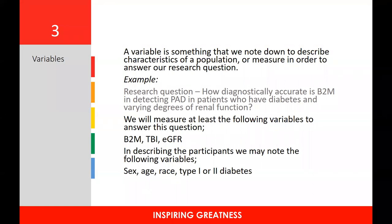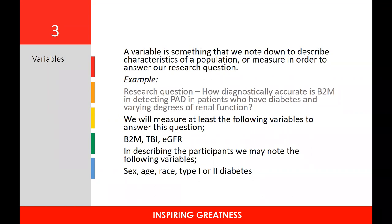When we describe the participants of our study we note down variables such as sex, age, race, and whether it's type 1 or type 2 diabetes. In our clinical studies, much of the demographic data comes from a data collection sheet covering age, sex, race, marital status, number of children, employment, level of education, and total monthly household income. What I'd like you to notice is that some variables give you two options, some give you more, and in others what's required is simply a number.